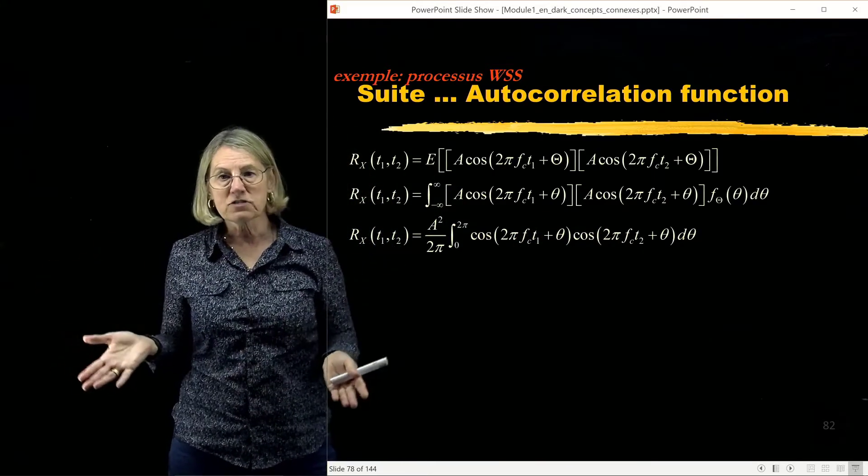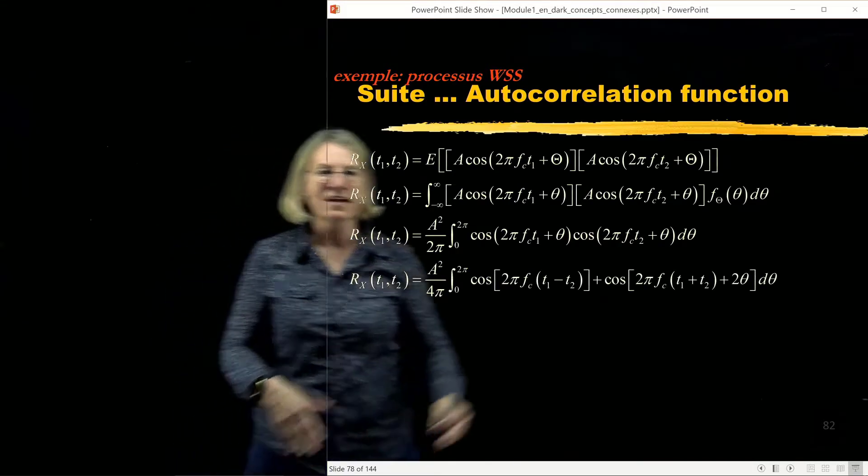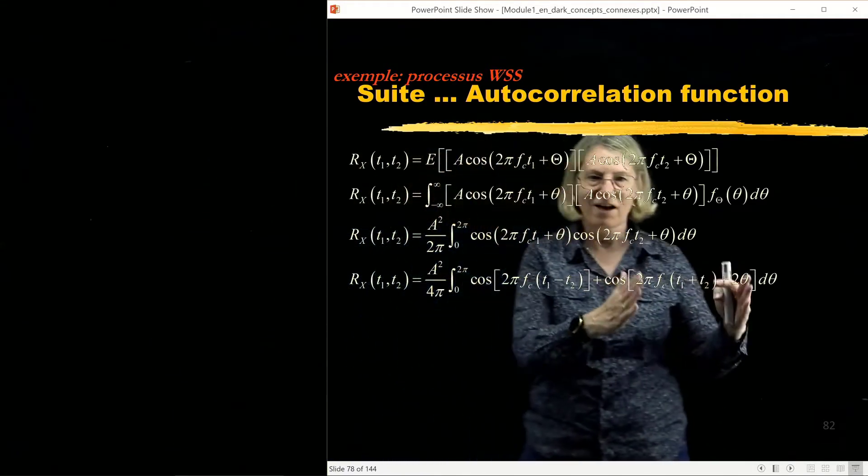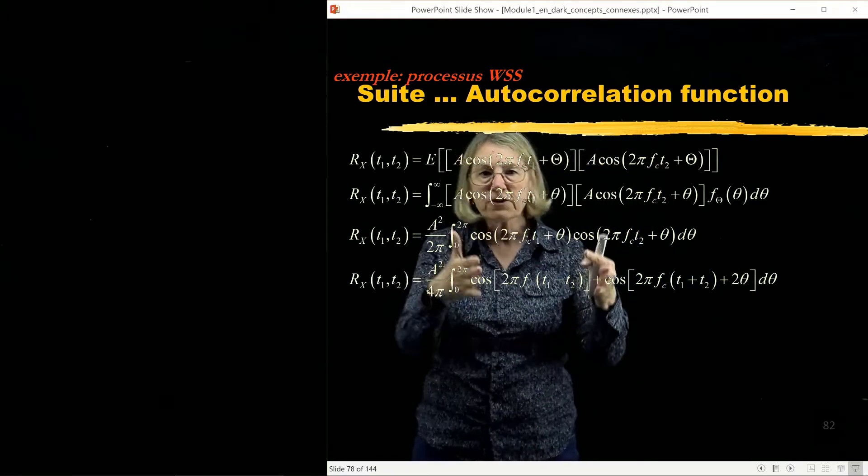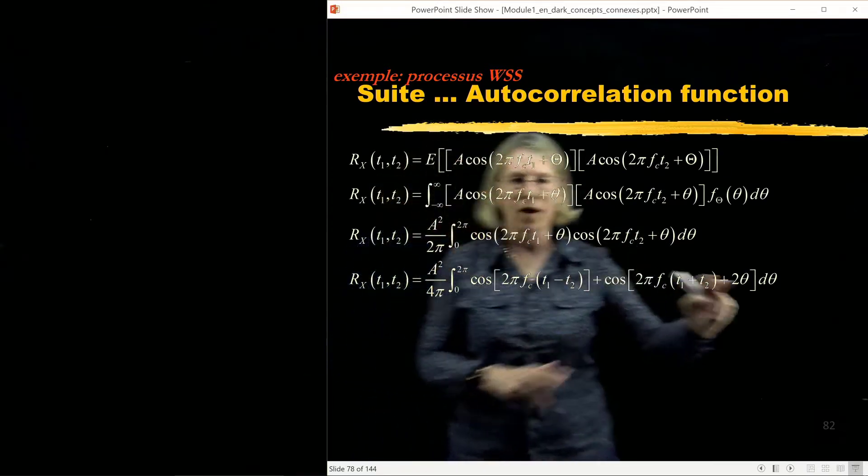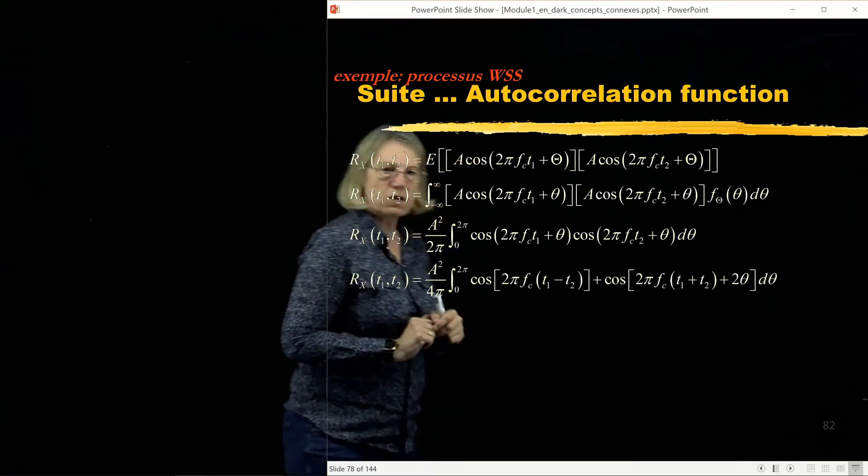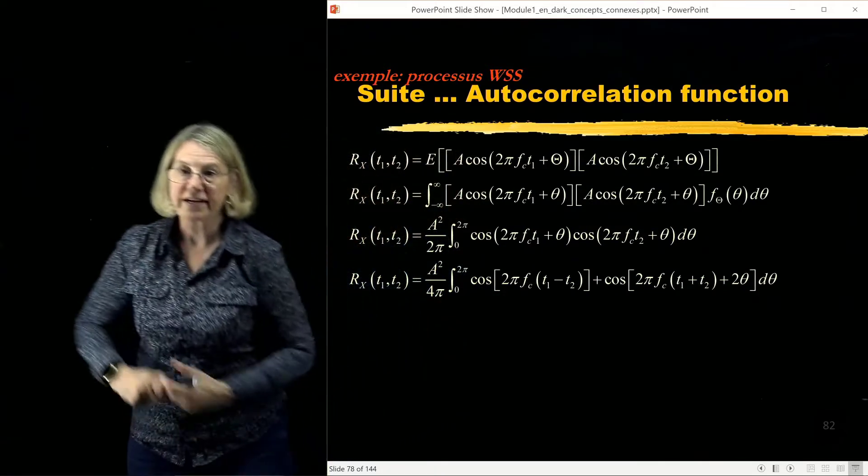And what I have here is a product of cosines. So the product of cosines I can use a trigonometric relationship to say that that is the same thing as the sum of two cosines. And in the first cosine I have the difference of the argument and in the second one I have the sum of the arguments. So using this property I guess I could write it over here.